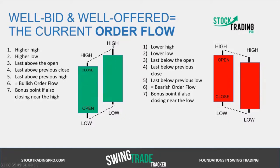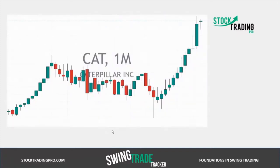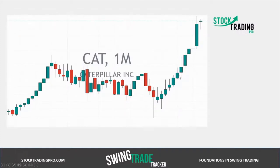Why does this happen? Why are there higher highs and higher lows? The smart money, the deep pockets, are not letting it go down because they're still buying. They're pushing prices up because they're buying at higher prices — this tells us what the smart money is doing. You can see this in Caterpillar on the monthly chart: nine months of well-bid candlesticks with higher highs and higher lows, then a melted candle, then another nine months of well-bid candles. Month after month, the smart money is making higher highs, higher lows, and closing strong.